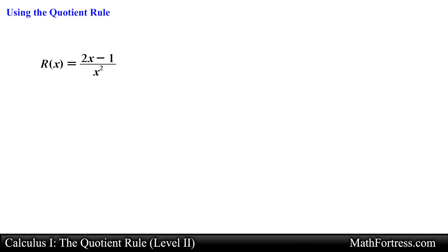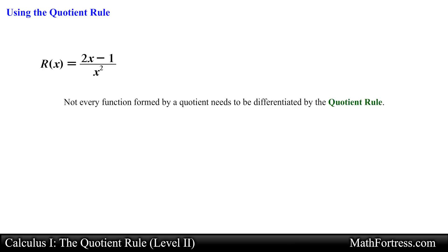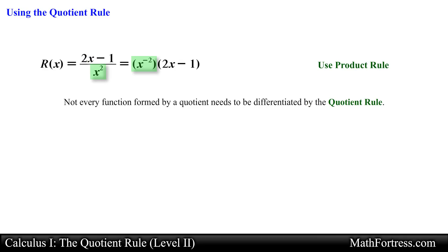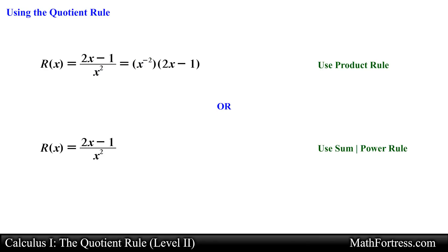The last thing you should be aware of is that you don't need to use the quotient rule every time you see a quotient. Not every function formed by a quotient needs to be differentiated by the quotient rule. At times it is more convenient to rewrite the quotient first, then use either the product rule or constant multiple rule along with the power rule. For example, the function r equals the quantity 2x minus 1 over x squared may look like it requires the quotient rule, but we can find the derivative by rewriting the denominator as a negative exponent. Alternatively, we can divide both terms in the numerator by the denominator and then apply the difference rule along with the power rule.